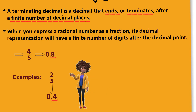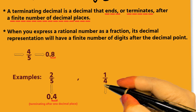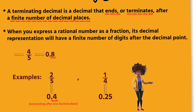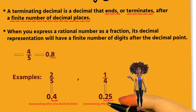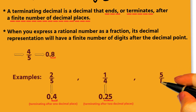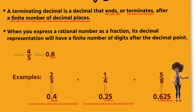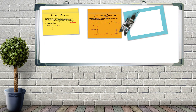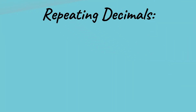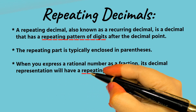Further examples: 2 over 5 equals 0.4, terminating after one decimal place. 1 over 4 equals 0.25, terminating after two decimal places. 5 over 8 equals 0.625, terminating after three decimal places.